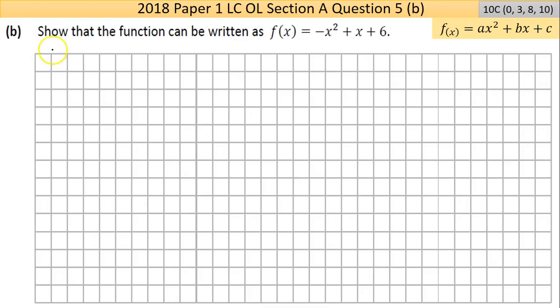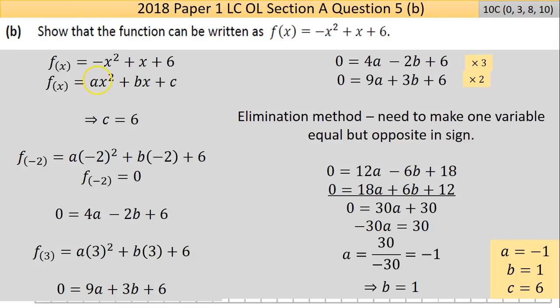Now part b here says show that the function can be written as f(x) equals minus x squared plus x plus 6. We're going to go to the answer for this one. But remember again, f(x) is equal to the same thing as y. Now my notation, I usually try to keep the x down here just to indicate that it's not f times x. f(x) is one thing. That thing in brackets just indicates the input for this particular function.